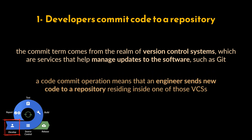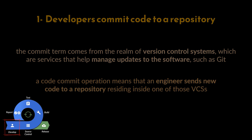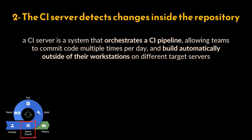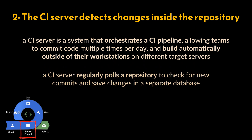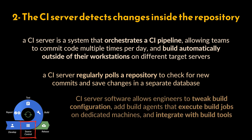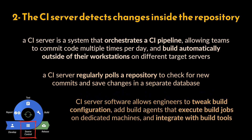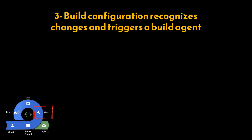Step two: the CI server detects changes inside the repository. A CI server is a system that orchestrates a CI pipeline, allowing teams to commit code multiple times per day and build automatically outside of their workstations on different target servers. A CI server regularly polls a repository to check for new commits and saves changes in a separate database. CI server software allows engineers to tweak build configuration, add build agents, and integrate with build tools.